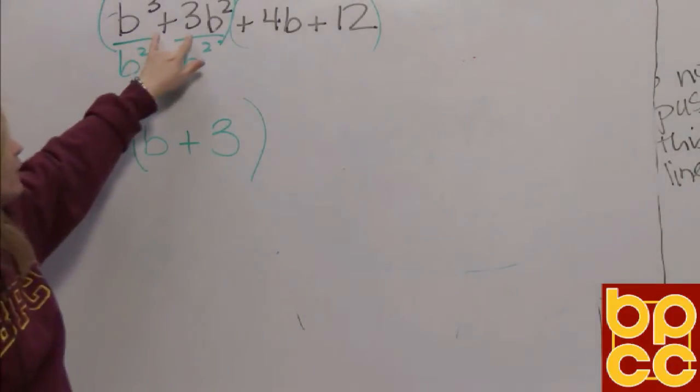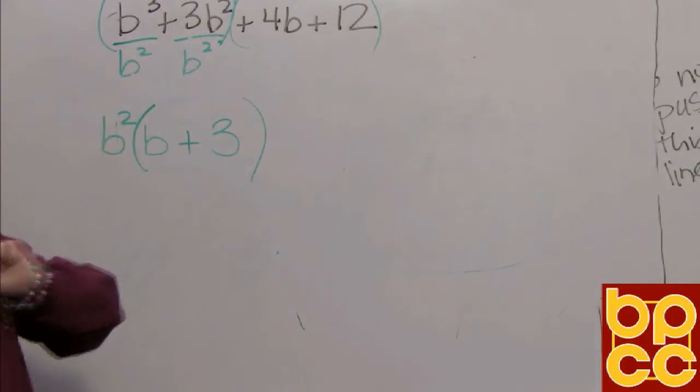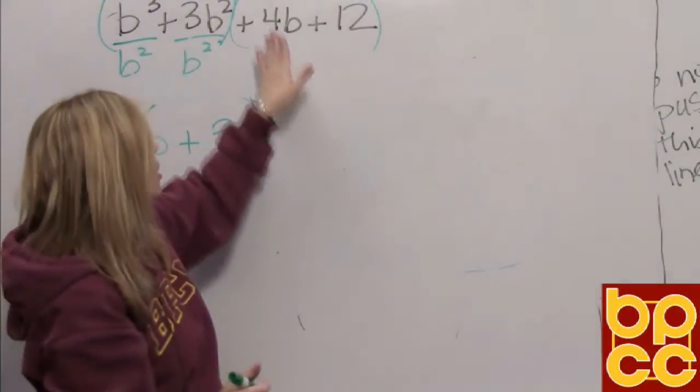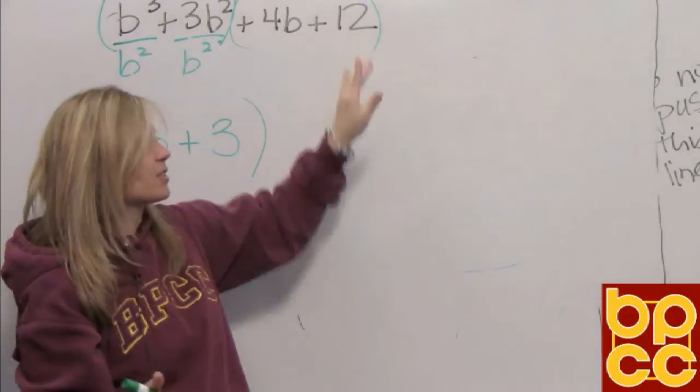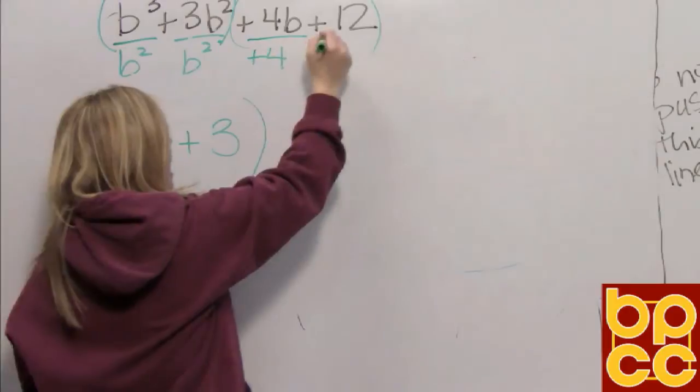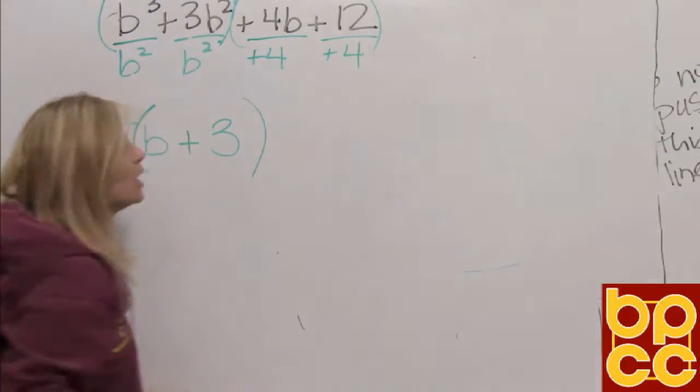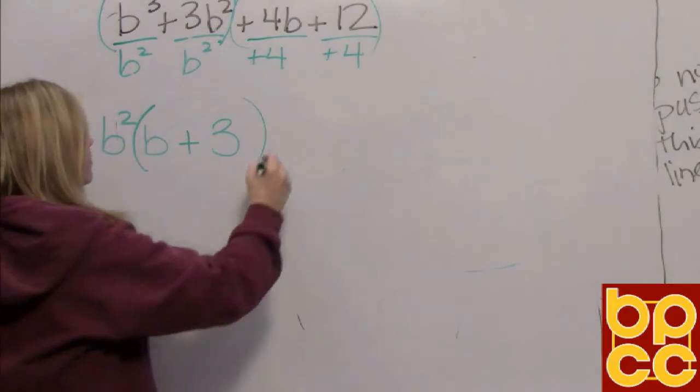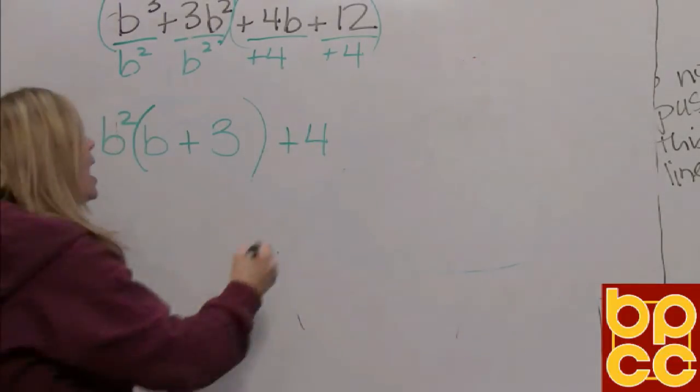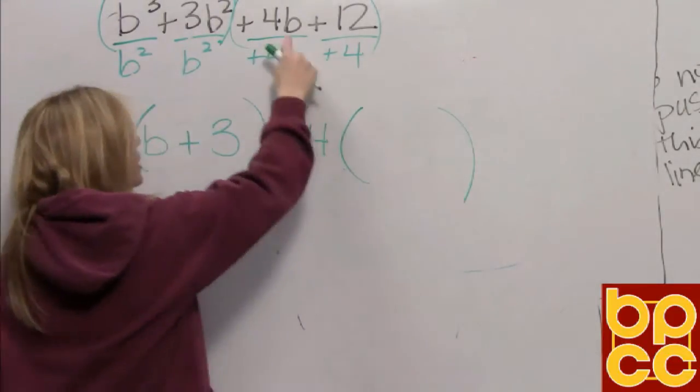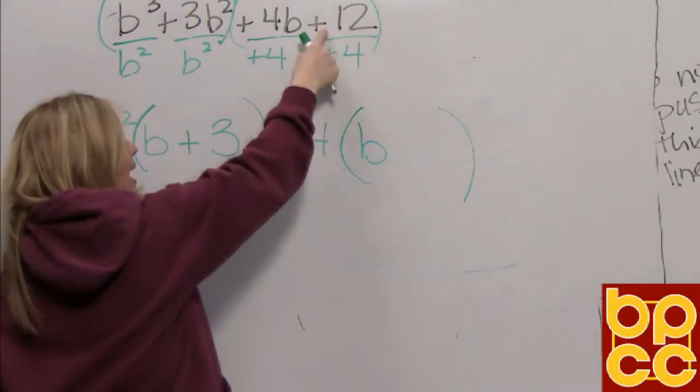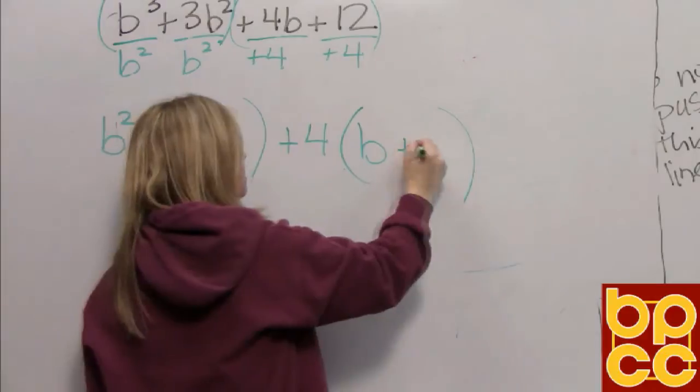Now, if you find the GCF of the first two terms, you must find the GCF of the last two terms. Positive 4B, positive 12, both have something in common. They could both be divided by positive 4. So that's their GCF. So we're going to write down their GCF, positive 4. And we're going to tell me what's left. 4B divided by 4 is B. Positive 12 divided by 4 is positive 3.